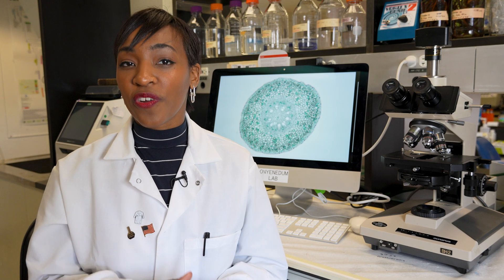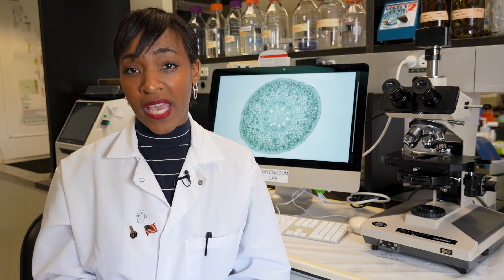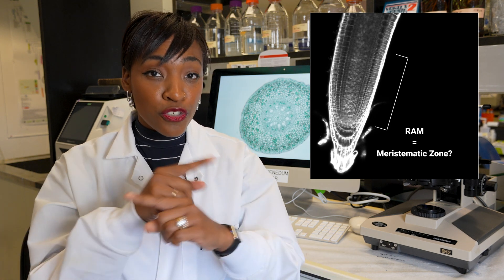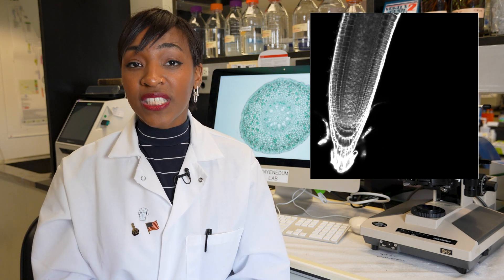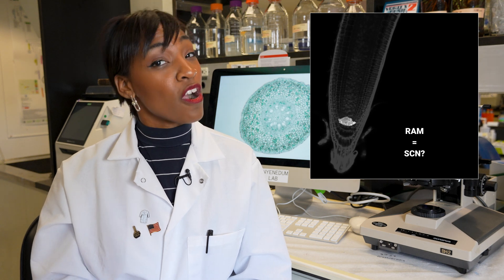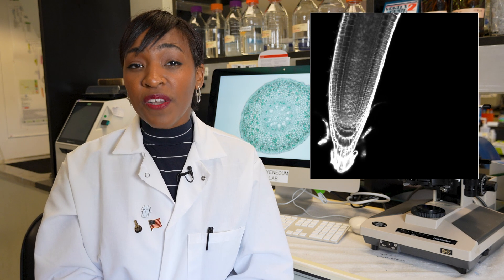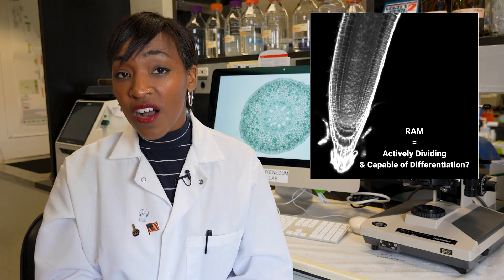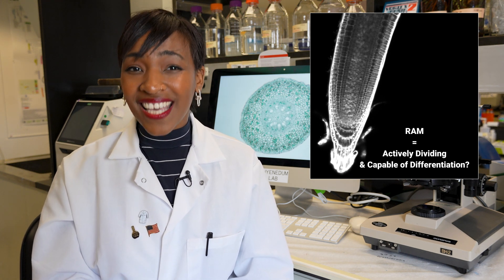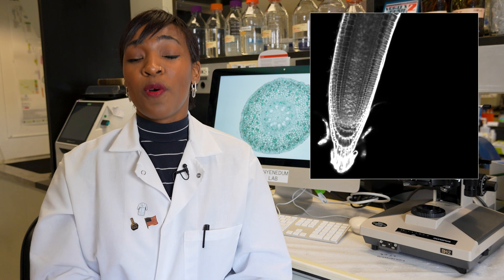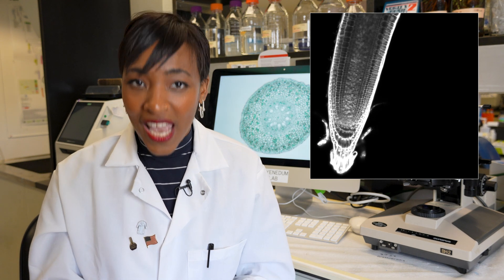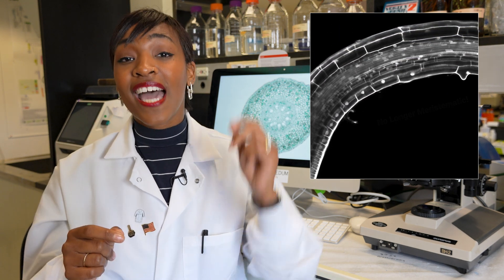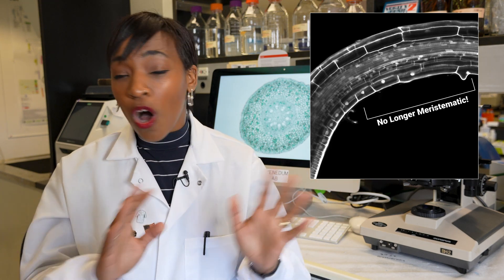Which of these zones overlaps with the RAM is a matter of debate. Some researchers use RAM and meristematic zone interchangeably. Others will say the RAM and SCN are synonymous. Some define the RAM as all cells that are actively dividing and capable of differentiation, and that can even vary between species. But what we can all agree is that the cells in the late elongation zone and differentiation zone are no longer meristematic.